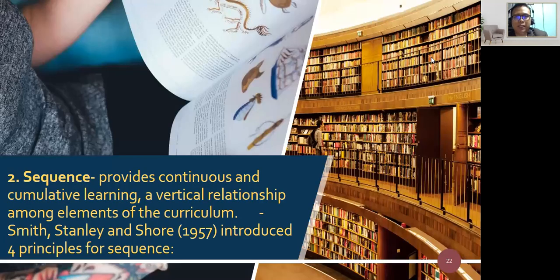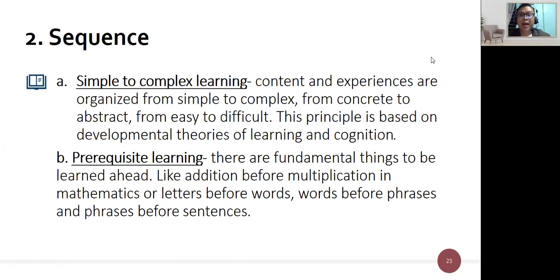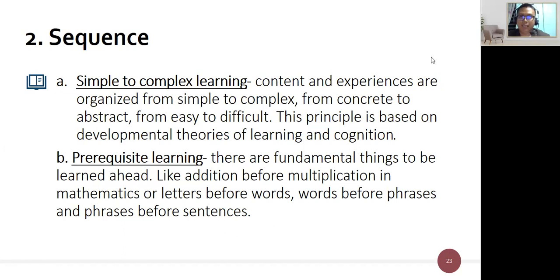The second dimension is sequence, which provides continuous and cumulative learning — the vertical relationship among curriculum elements. Smith, Stanley, and Shore introduced four principles. The first is simple to complex: content and experiences are organized from simple to complex, concrete to abstract, and easy to difficult, based on developmental theories of learning and cognition. For example, in assessments, easier questions come first and essays last, as they require higher-order thinking skills.